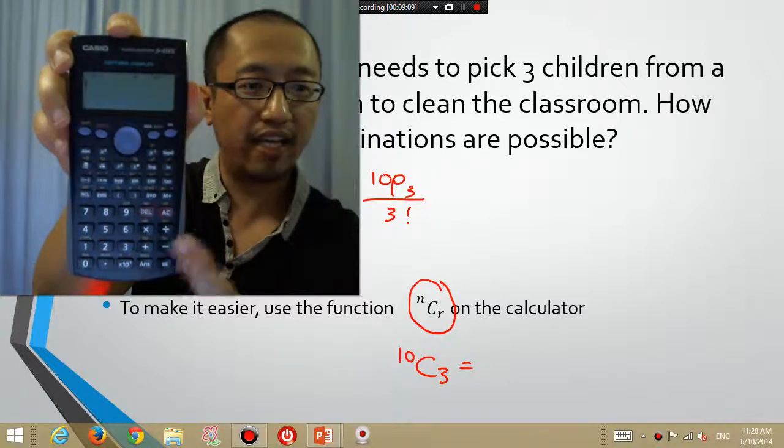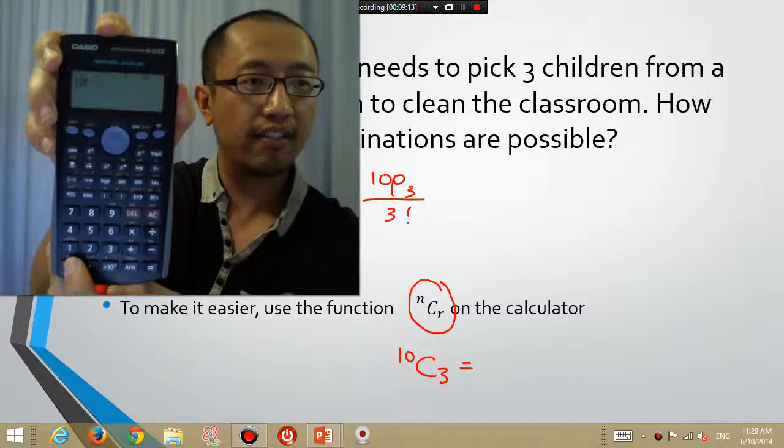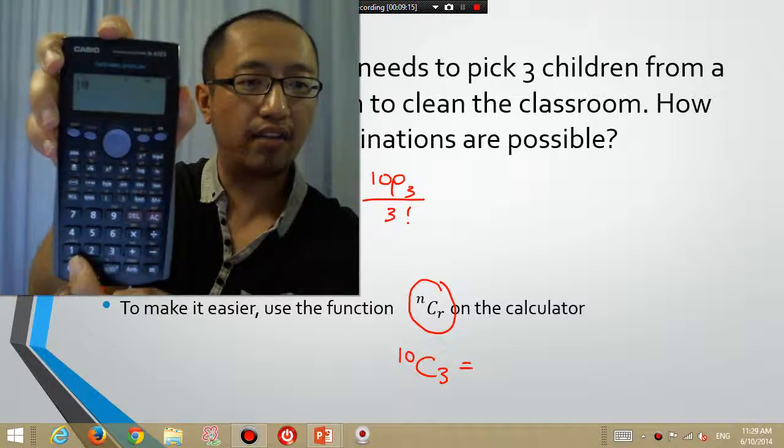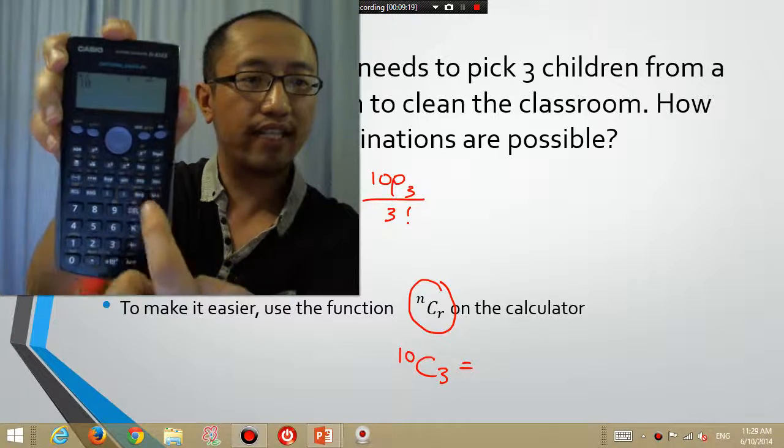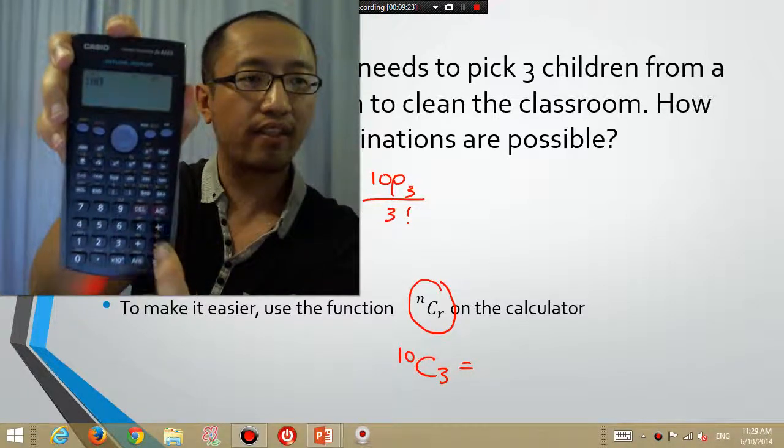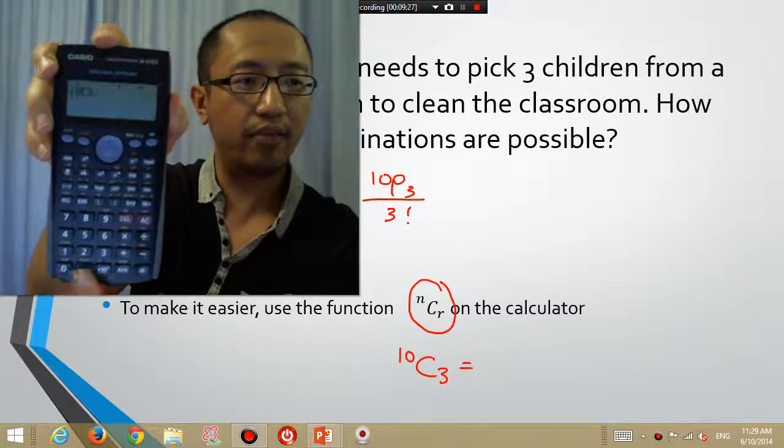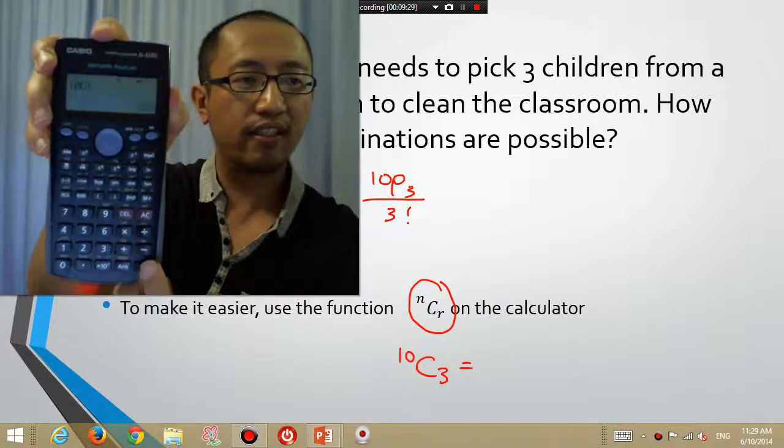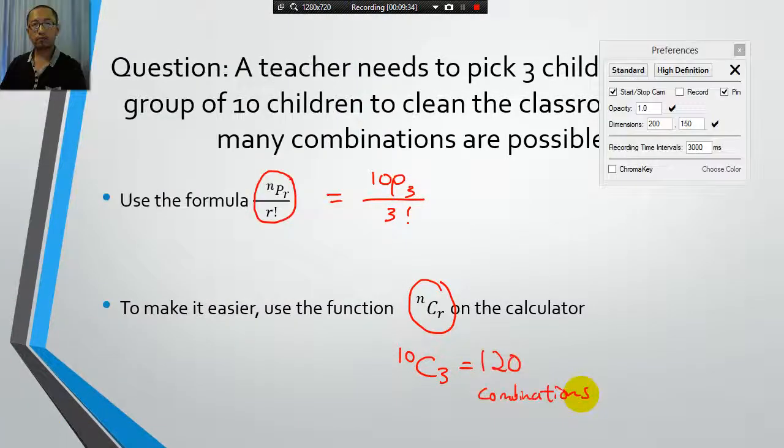So I'm going to put in the calculator 10, and then the C button is just shift. C is over here on top of the divide button. 10 C 3, and then you press equals, and then you get 120. So the answer is 120 combinations.